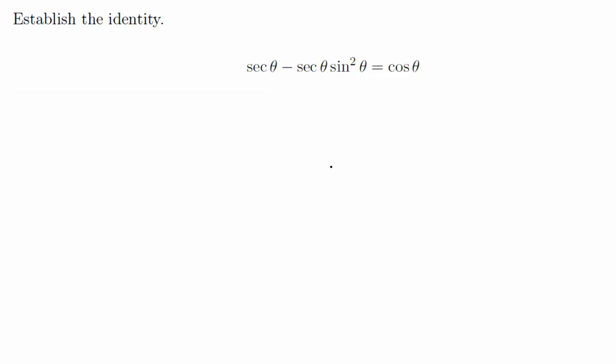Establish the identity: secant theta minus secant theta times sine squared theta equals cosine theta. So let's start with the left-hand side. This is what we have on the left side.